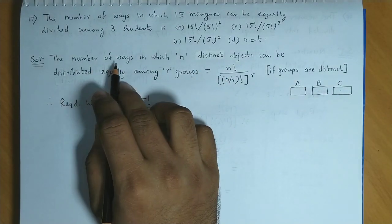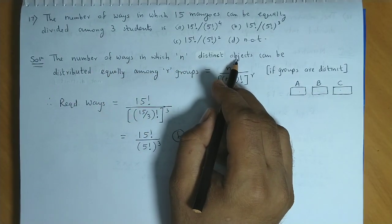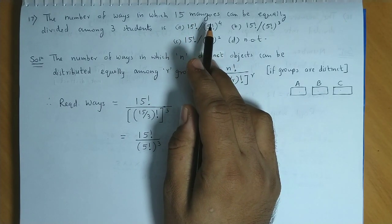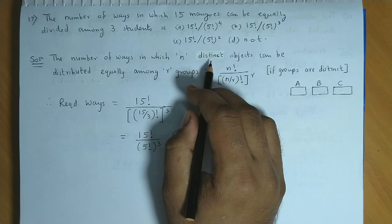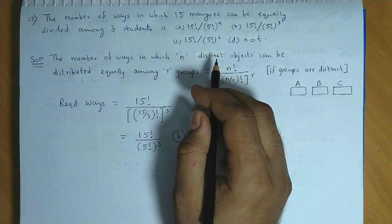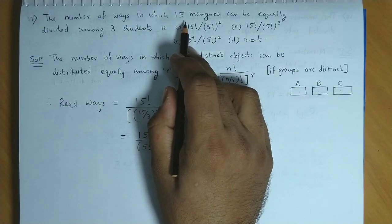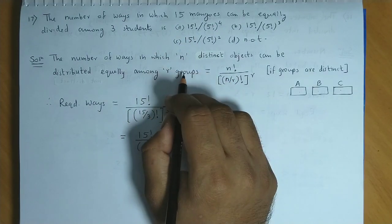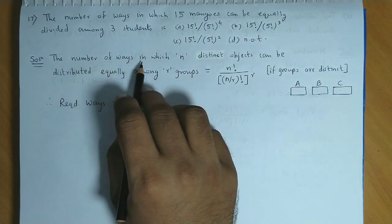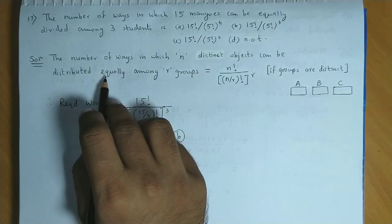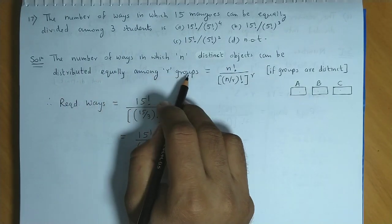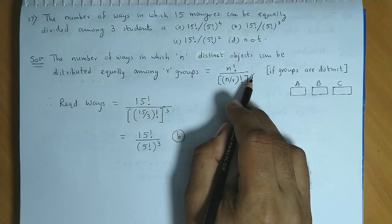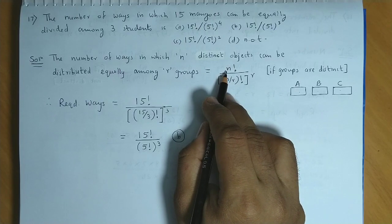The formula is: the number of ways in which n distinct objects can be distributed equally amongst r groups is n! / ((n/r)!^r). Here it has not been mentioned that the mangos are identical, so we treat them as distinct objects.